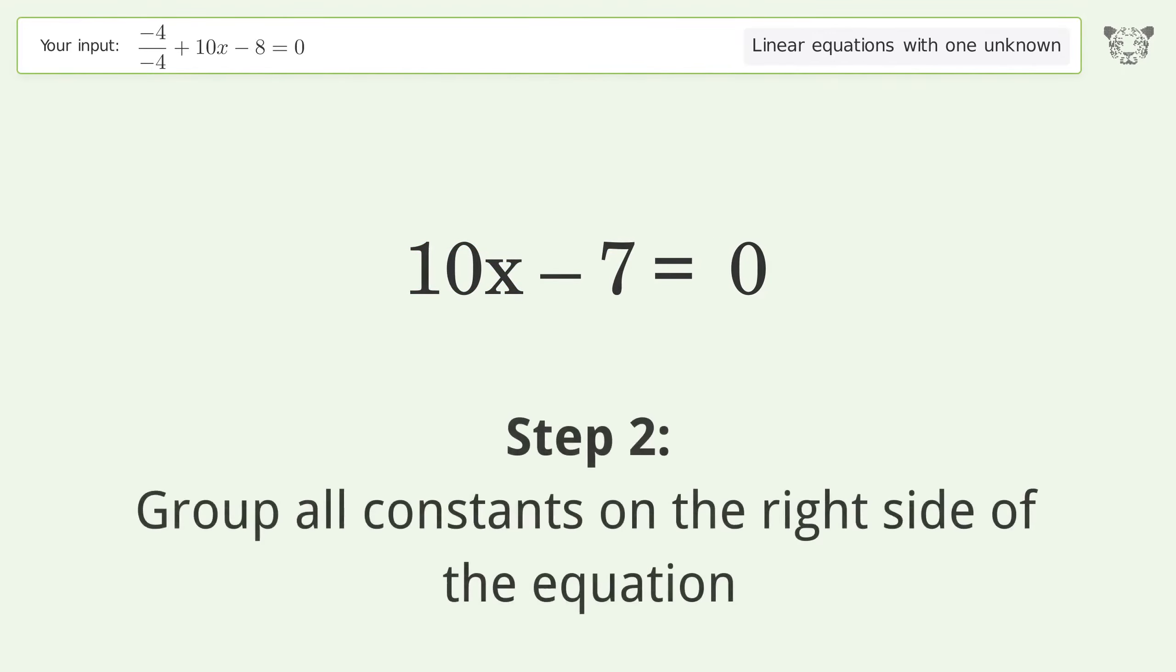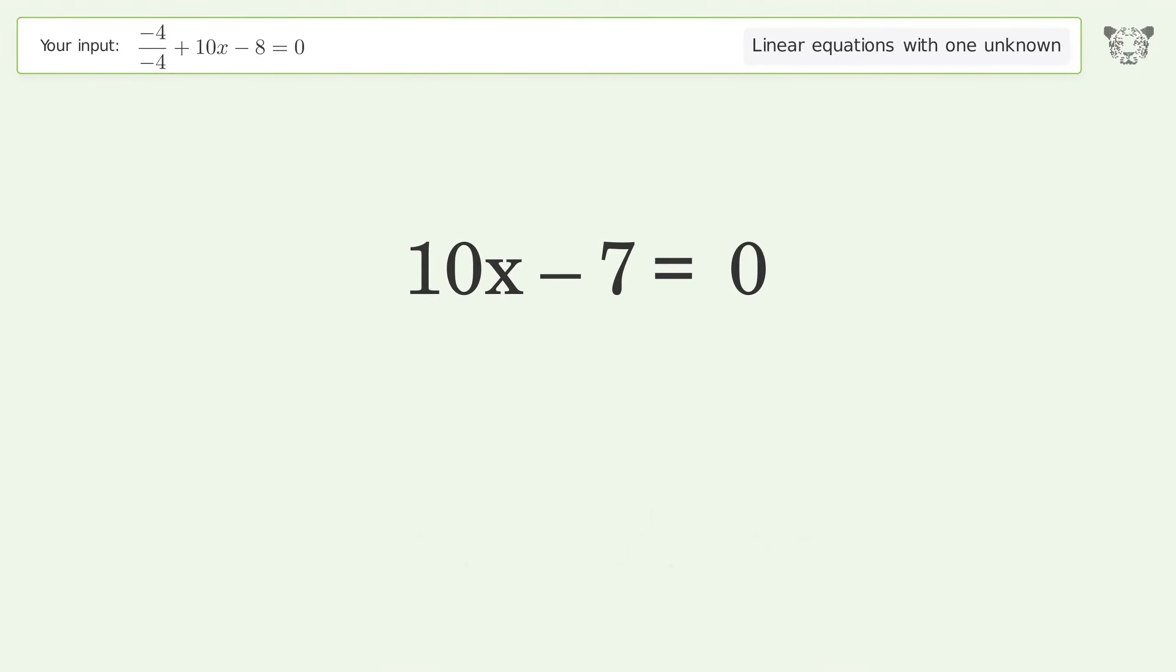Group all constants on the right side of the equation. Add 7 to both sides. Simplify the arithmetic.